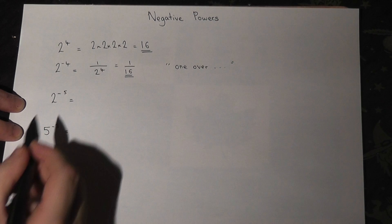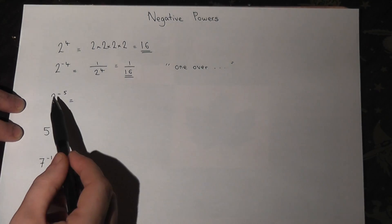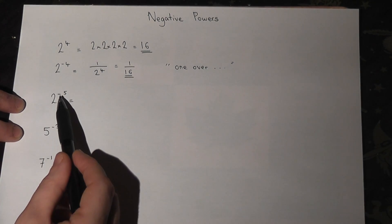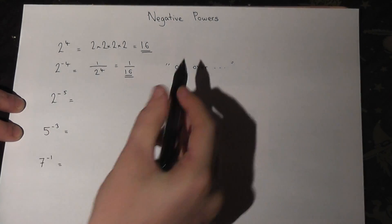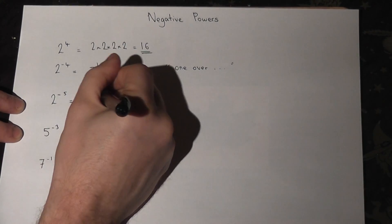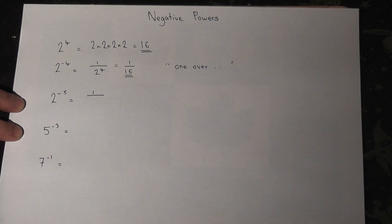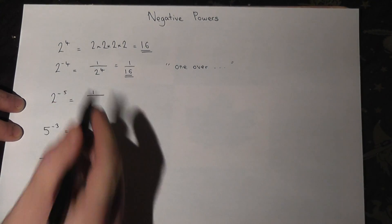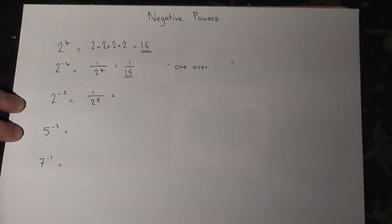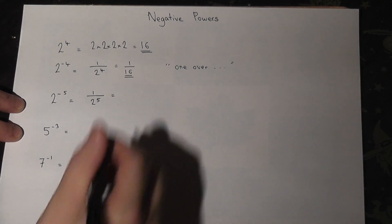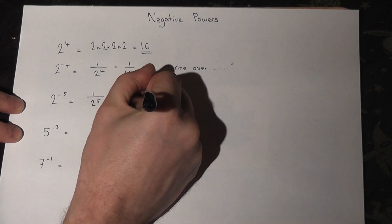So in the third one, we have 2 to the power of negative 5. The negative power just means 1 over, so 1 over 2 to the power of 5. Now 2 to the power of 5 is just 2, 4, 8, 16, 32. So it's 1/32.